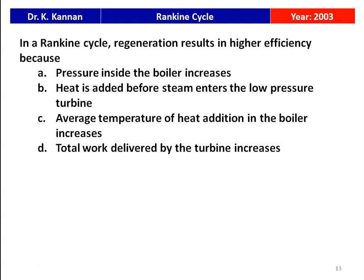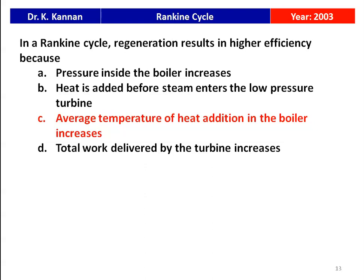The next question from the 2003 question paper: in a Rankine cycle, regeneration results in higher efficiency because — pressure inside the boiler increases, heat is added before steam enters the low-pressure turbine, the average temperature of heat addition in the boiler increases, or total work delivered by the turbine increases? As discussed, the efficiency of the Rankine cycle depends on the mean temperature of heat addition, and for regeneration the mean temperature of heat addition is more. The answer is: average temperature of heat addition in the boiler increases.